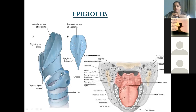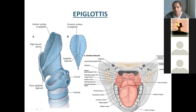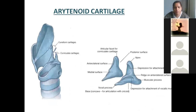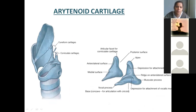What is this cartilage which is like a signet ring? Cricoid. Anteriorly you call it as arch; posteriorly, lamina. At the upper corner of the lamina you are finding two articular facets, over which arytenoid cartilage is resting. Arytenoid will have certain processes — it has muscular process and vocal process — these two process names are important. Resting over the upper border of the lamina of the cricoid cartilage we have arytenoid cartilage; over the arytenoid we have corniculate; over which we will have cuneiform cartilages.